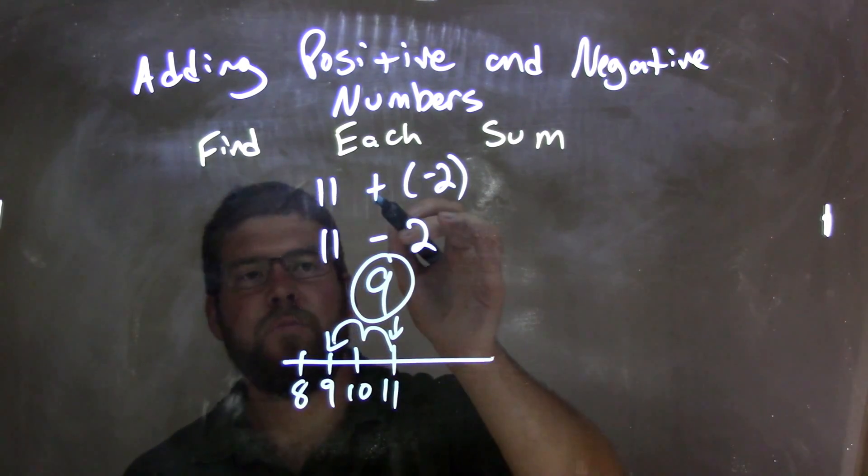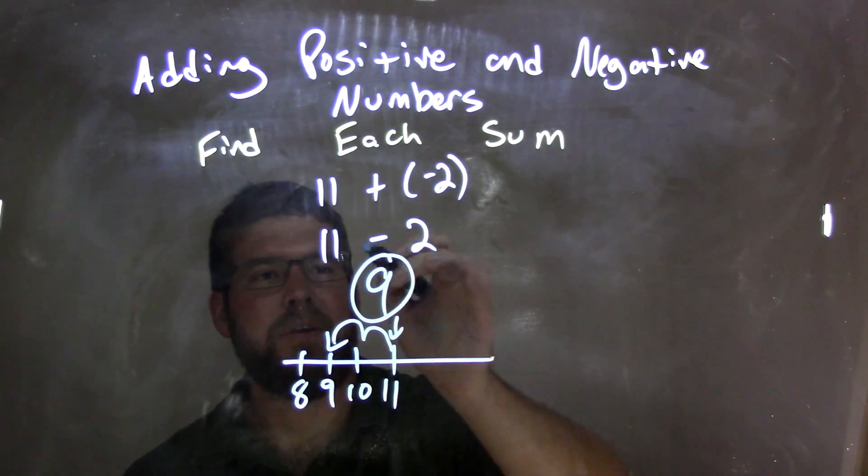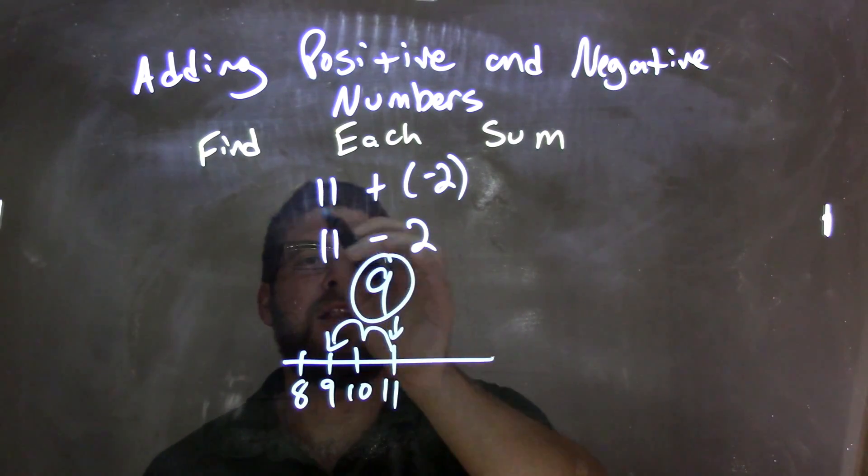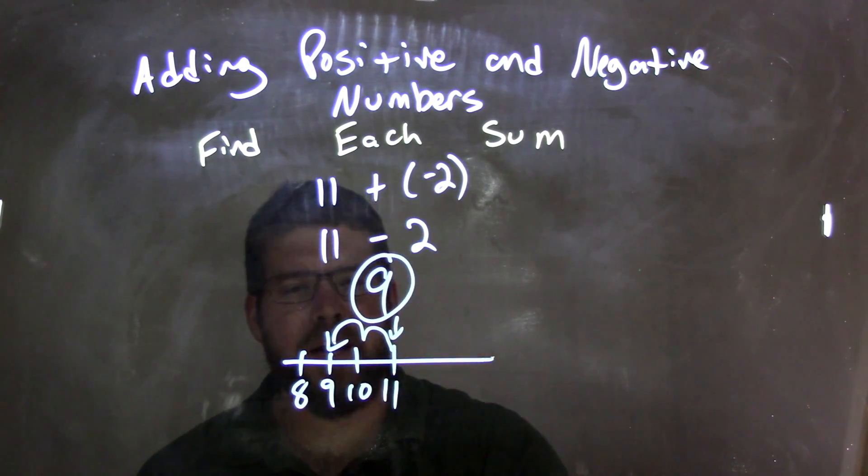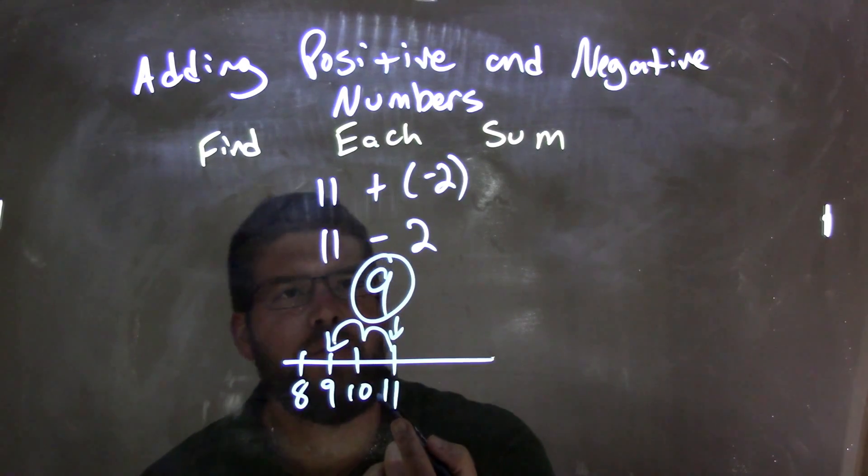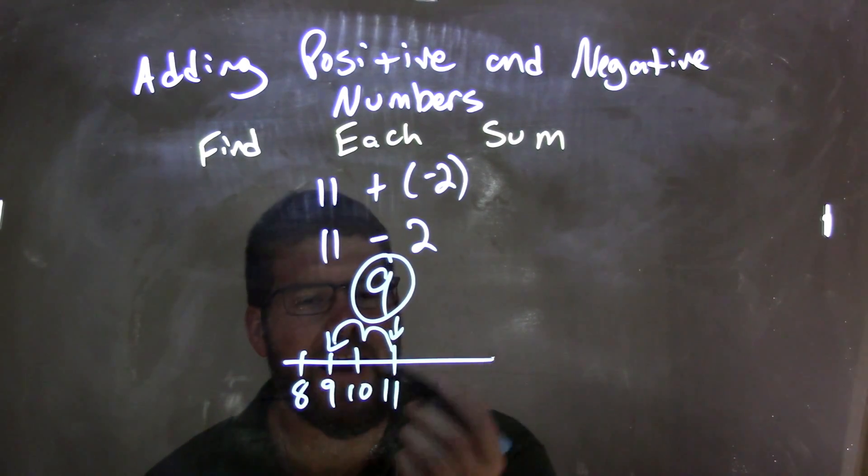So either way works. We can convert the addition of a negative to be a subtraction. 11 plus negative 2 is the same thing as 11 minus 2 which is 9, or we start with 11 and move to the left 2 units because we're adding a negative 2.